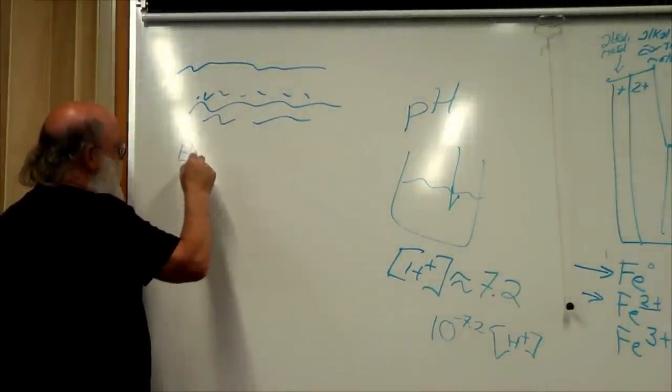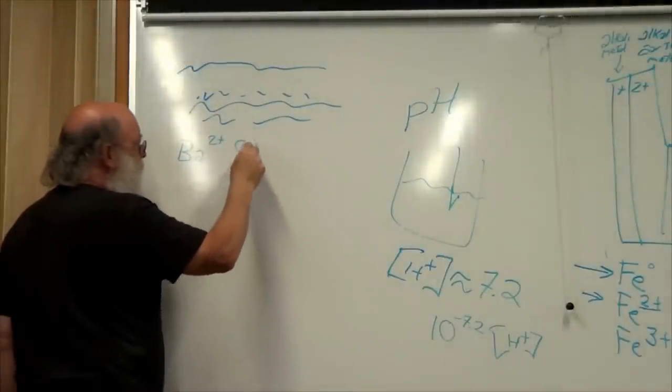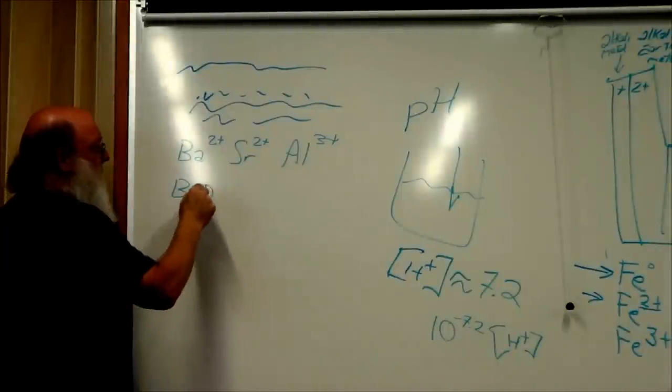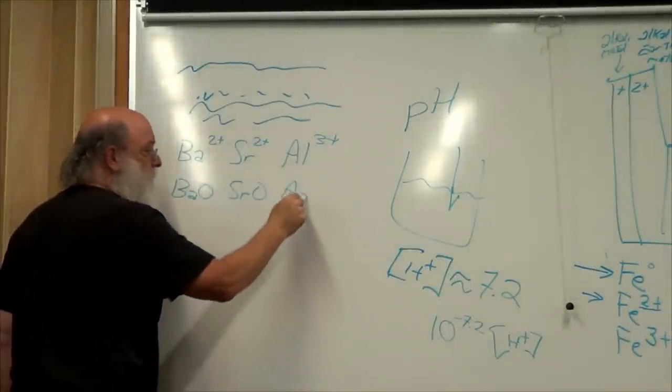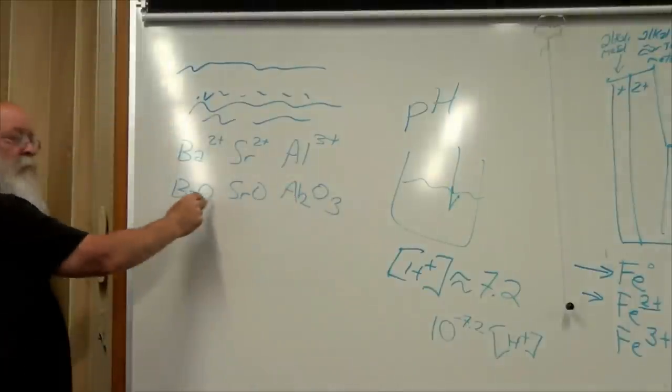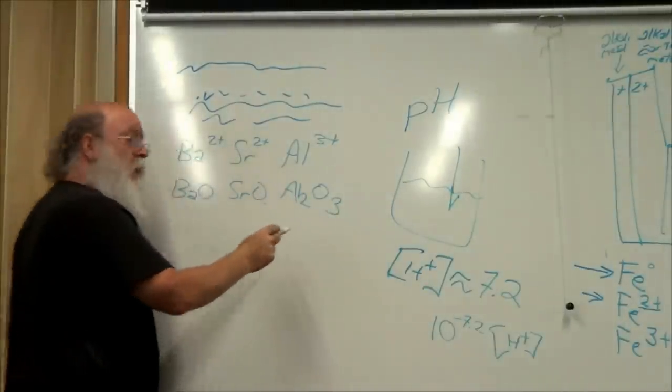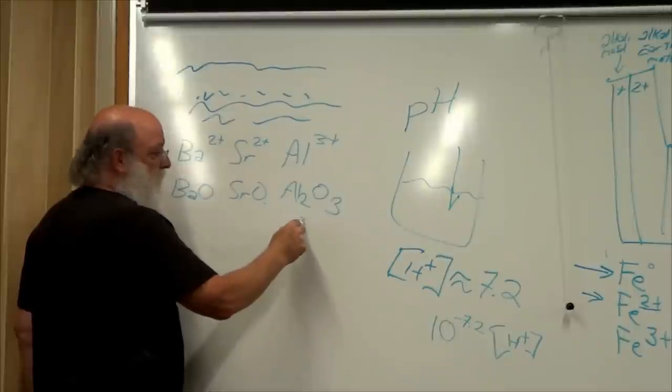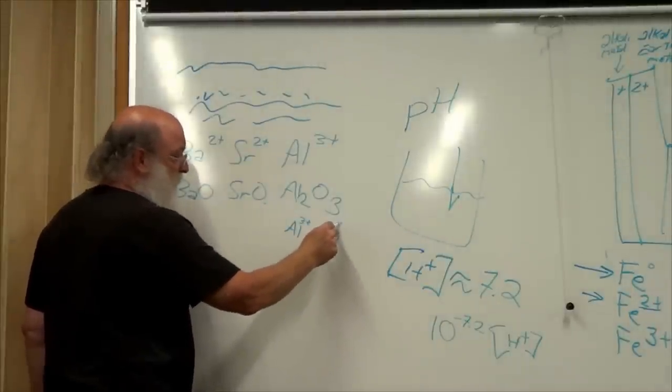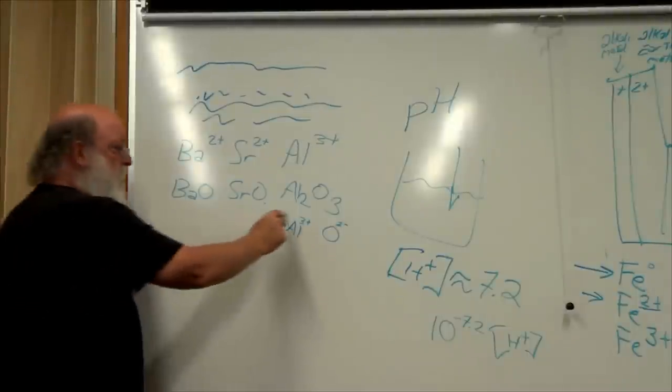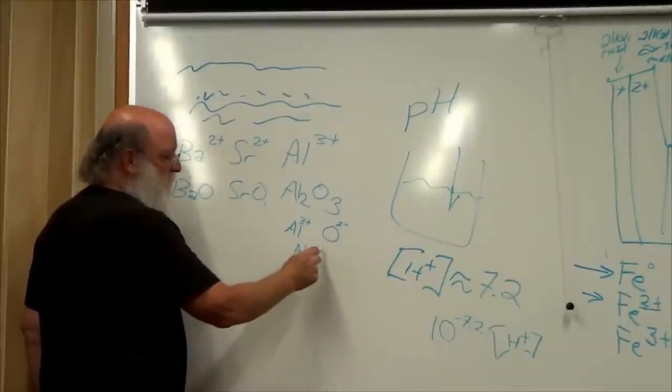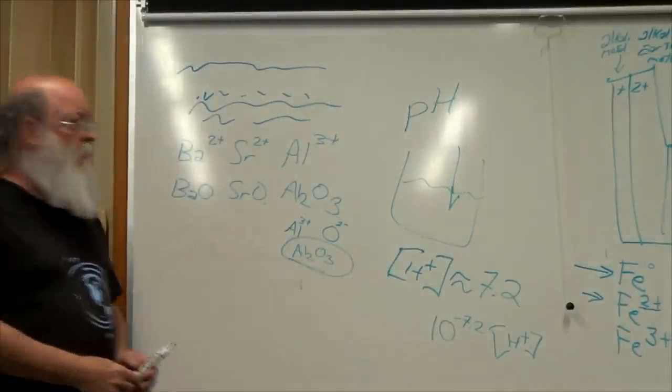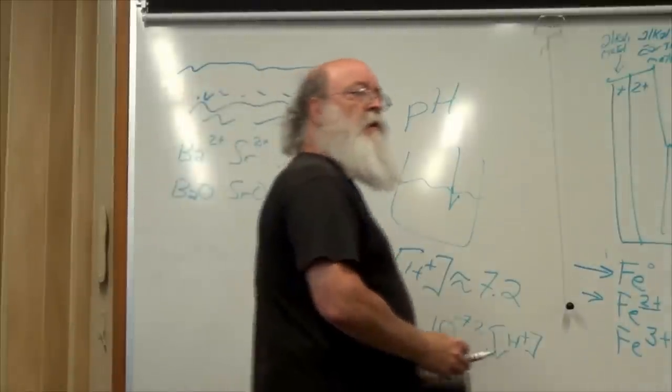The speaker was in the movie What in the World Are They Spraying with Michael Murphy about six or seven years ago and became noted as the resident expert. The three things of concern are barium, strontium, and aluminum. In the sprays they are in oxide forms: BaO, SrO, and Al2O3. Aluminum oxide is Al2O3 because aluminum's three-plus charge must balance oxygen's minus-two charge. This is called alumina and is a major spray component.